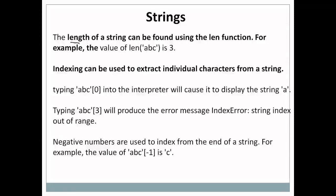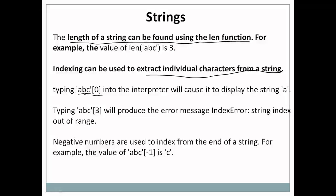The length of a string can be found by using a function called the len function in Python. Indexing can be used to extract individual characters from a string. For example, if you type 'abc'[0], you are extracting the 0th character from the string. It will return the 0th character, which is 'a'.